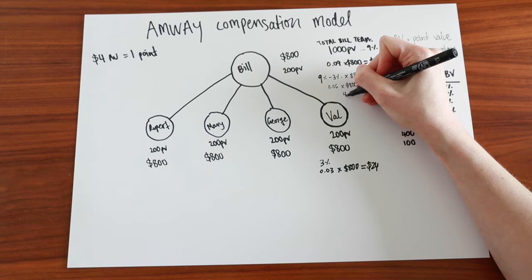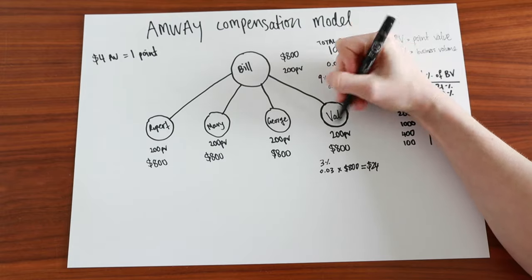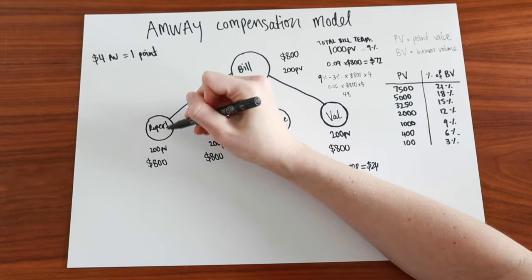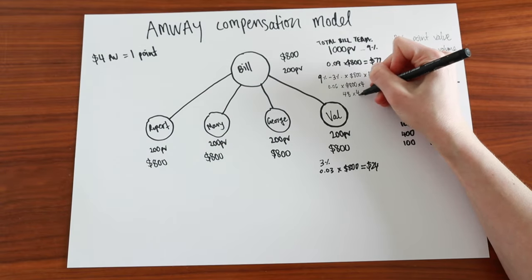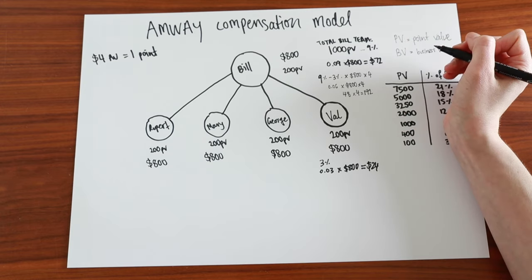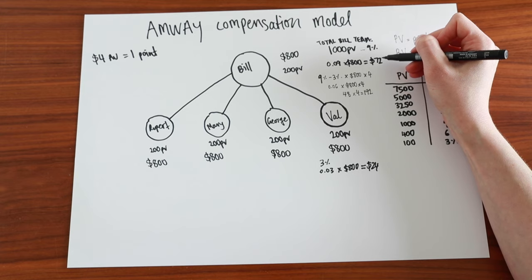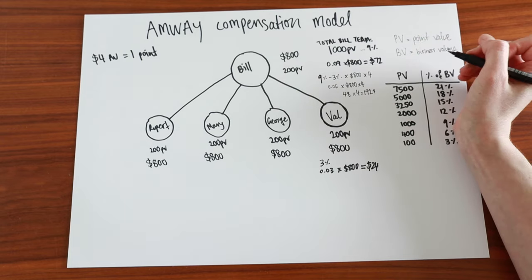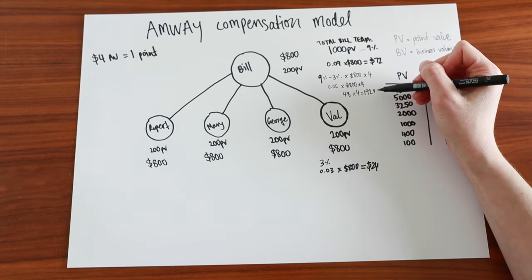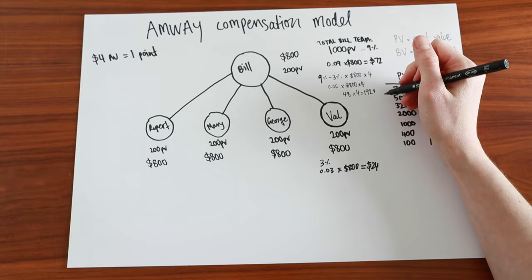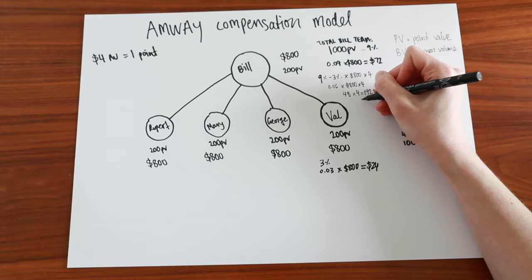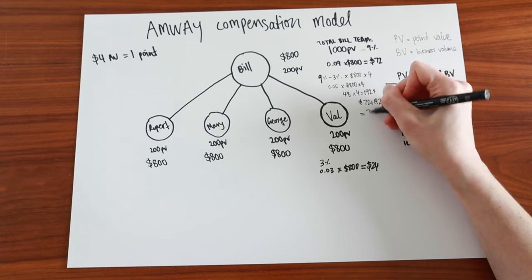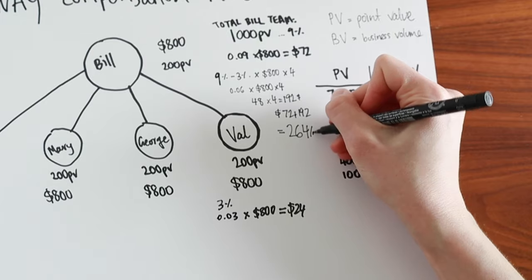So we get $48 from Val, $48 from George, $48 from Mary's business and $48 from Rupert's business. So 48 times 4 equals 192. So Bill gets $72 back from his own business or his own spendings and $192 from the team spendings. So each month Bill gets back $72 plus 192 equals $264 per month.